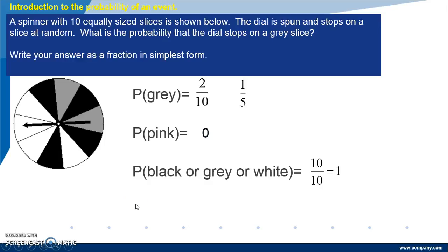Finally, what is the probability of not black? Well there are 4 black slices, there are 10 slices in total, 10 minus 4 is 6. The probability of not black is 6 over 10 and when we change it to simplest form, it is 3 over 5.